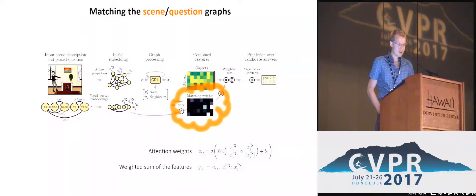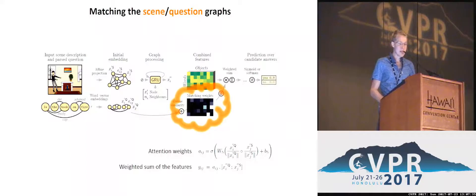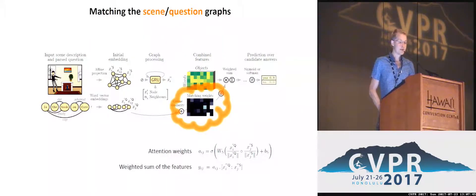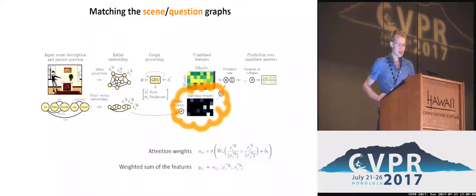A crucial part of the network is computing a set of matching weights, similar to an attention mechanism. A scalar weight is computed for every pair or combination of nodes from the two graphs. Those weights are then used to compute a weighted sum of the representations of all nodes from the two graphs, which serves as the final representation to produce the answer. This step practically permits sub-graph matching between the representation of the scene and the question. Finally, the output stage is simply an MLP classifier that produces a score over a set of candidate answers.